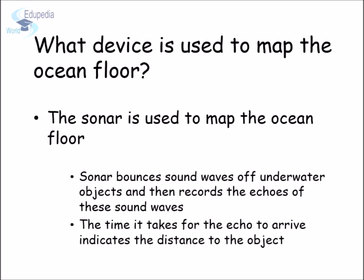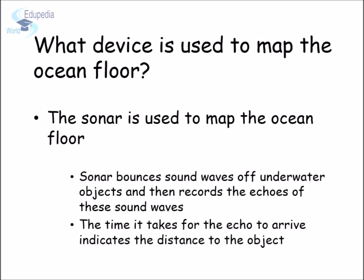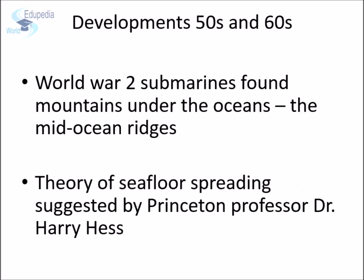Echo-sounders produce sound waves that travel outwards in all directions, bounce off the nearest object, and then return to the ship. The round trip time of the sound wave is recorded. By knowing the speed of sound in seawater, scientists could calculate the distance to the object the sound wave hit. During the war, the sound waves rarely encountered any enemy submarine. After the war, all this information was used to produce a map of the seafloor.